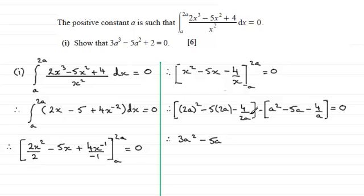And then for this term here, I notice that the 2 will cancel into the 4 twice. So we've got minus 2 over a. And then minus minus 4 over a. So that's minus 2 over a plus 4 over a. And that's going to give me plus 2 over a. And that equals 0.